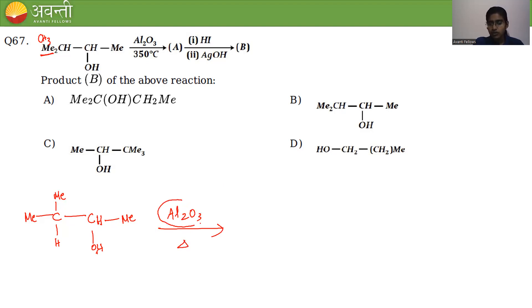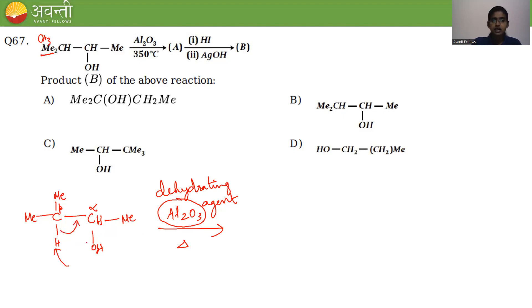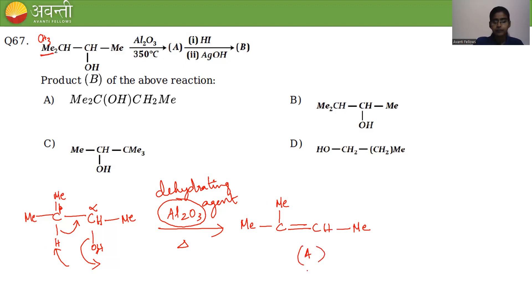Al₂O₃ is a dehydrating agent that eliminates water. The OH is on the alpha carbon; hydrogen is eliminated from the beta carbon. Water (H₂O) comes out, giving compound A: an alkene with a double bond and methyl group.